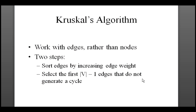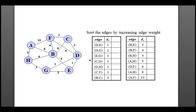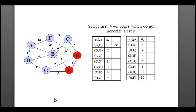Now let's go to the simulation. From the walkthrough we can see it's the same graph used previously. We start from any edge and walk through the forest of edges. The first edge DE has weight 1, so we take it. The next edge DG has weight 2, so we take that too. The edge EG we skip because it would form a cycle — D, E, G would form a cycle.